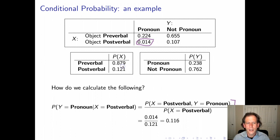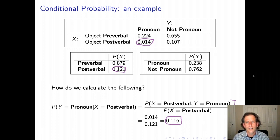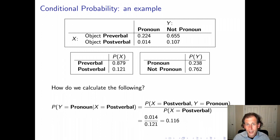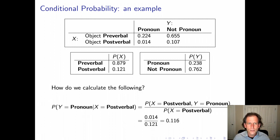Conditional probability calculation is an essential feature of both machine learning and statistics, and also a very powerful way of thinking about how the human mind works for language. We'll be resorting to conditional probabilities throughout this course. It's always useful to ask: what is the conditional probability that best captures the problem an intelligent agent is facing in a particular situation?